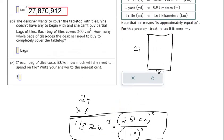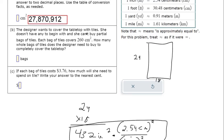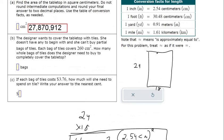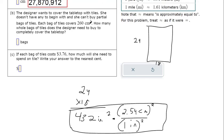Part B: The designer wants to cover the tabletop with tiles. She doesn't have any to begin with and can't buy partial bags of tiles. Each bag covers 260 square centimeters. It sounds like they're really small tiles, so we don't have to worry about overstepping on this side. This is just a division problem.